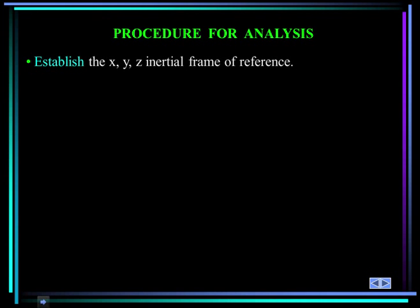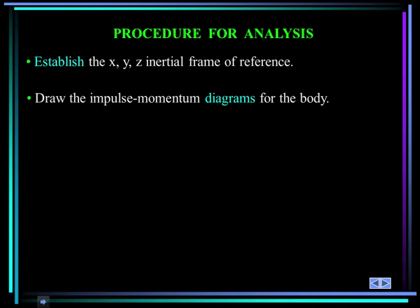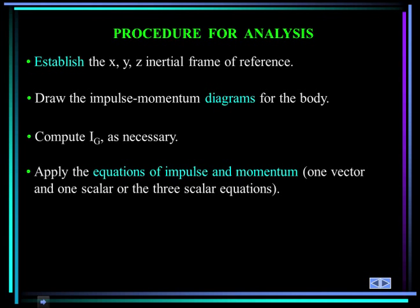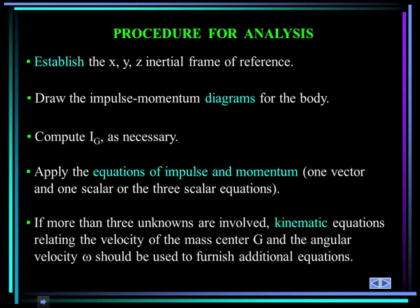Let's establish a procedure for analysis. First, establish an X, Y, Z coordinate system. Draw the impulse-momentum diagrams for the body. Compute the mass moment of inertia as necessary. Apply the equations of impulse and momentum — that's one vector and one scalar equation, or three scalar equations. If more than three unknowns are involved, you'll probably need kinematic equations relating the velocity of the mass center and the angular velocity omega.